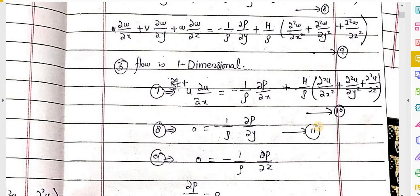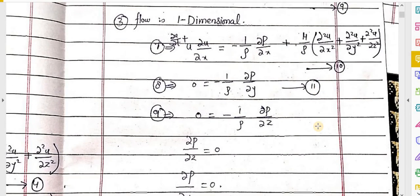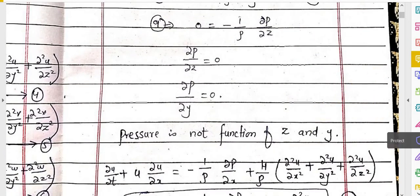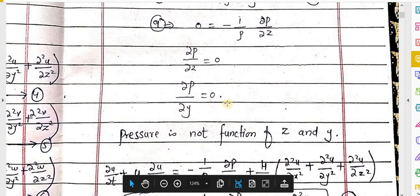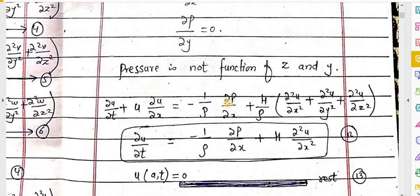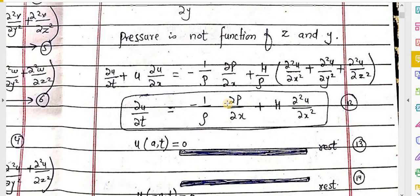The third assumption is that flow is one-dimensional. This means equation 7 becomes equation 10, equation 8 becomes equation 11, and equation 9 is similarly simplified. We find that ∂P/∂z and ∂P/∂y are equal to zero, meaning pressure is not a function of z or y.